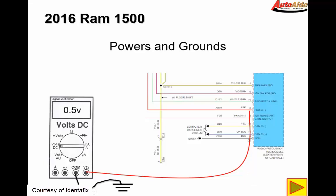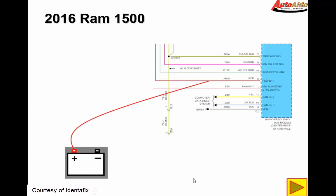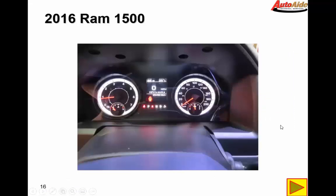The module needs full 12 volts in order to power up and communicate properly. So what we're going to do is confirm that this will power up with proper power. We're going to take a fused jumper wire, hook it up to the battery positive, and jumper it to the battery input on this radio frequency hub and try to start the truck. Lo and behold, with proper battery voltage fed to that module, the truck starts and runs no problem. Everything starts communicating again, and it appears the issue with this truck was that there was no power going to that radio frequency hub.